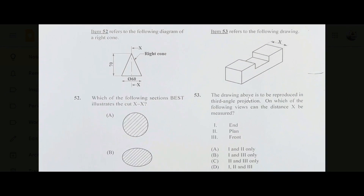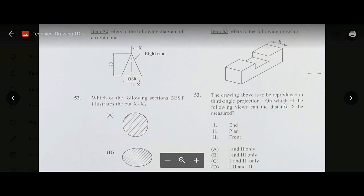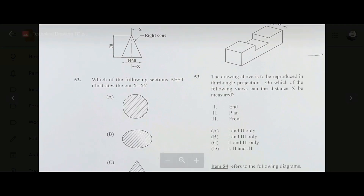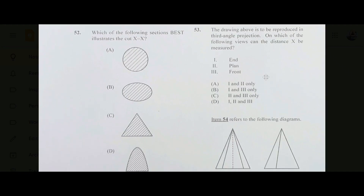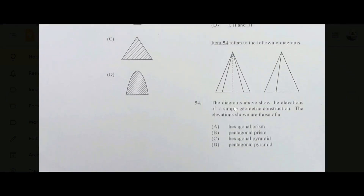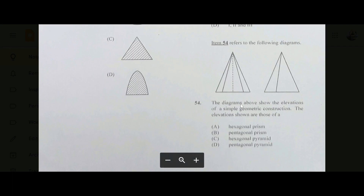Number fifty-three: the drawing is to be reproduced in third angle projection. On which views can distance X be measured? End — yes. Plan — yes. Front — no. So the answer is A, views 1 and 2. Number fifty-four: the elevation shows a pyramid — not a prism, so A and B are out. It's not hexagonal, so it's a pentagonal pyramid with a five-sided base — number 54, D.